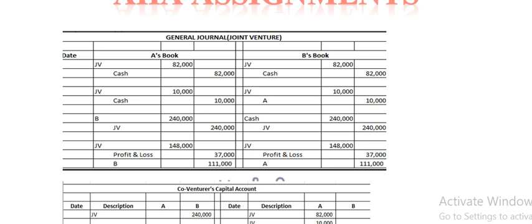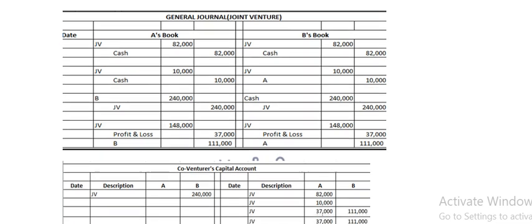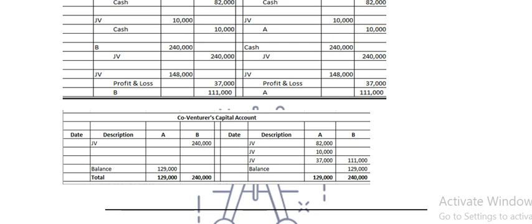The Excel sheet columns will be: Date, Cash, A's Book, and B's Book. And then their co-venture columns as well.